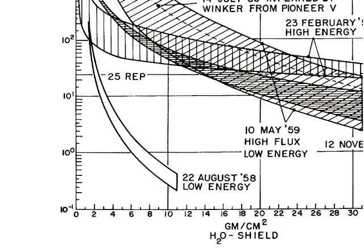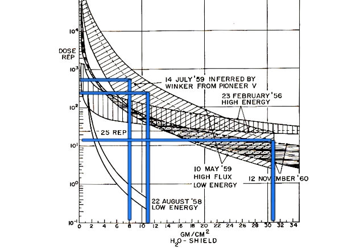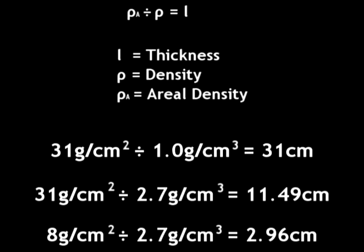Thirdly, although the wiki-vandal focuses heavily on the low energy flare of August 22nd 1958, he ignores the low energy flares of May 10th and July 14, 1959. The Astronautical Engineering and Science schema clearly indicates that a hull with an aerial density of 8 grams per square centimetre would bring the dose down to around 10 cubed, or 1,000 rem per hour. And the shuttle shielding of 11 grams per square centimetre would only reduce the dose to somewhere above 100 rem per hour. In fact, you need a shield with an aerial density of 31 grams per square centimetre just to bring the dose down to around 25 rem per hour — more than double the aerial density of the shielding used on the ISS.